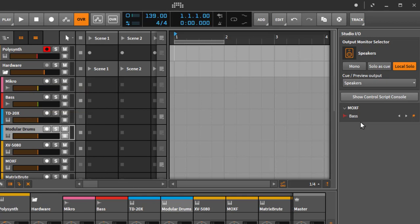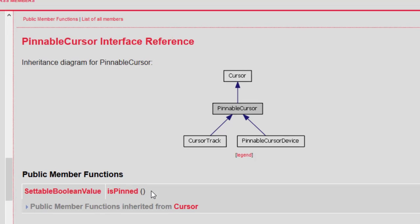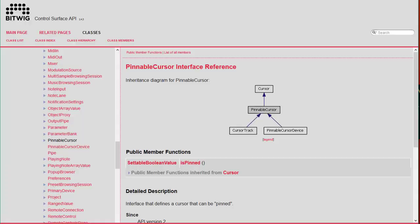By using the pin feature you can use your device separately, so you can have multiple devices controlling different tracks. There is also API support for that — you can pin a track from your device. If you look into the pinnable cursor interface, it is implemented both by the cursor track and by the pinnable cursor device, which we'll talk about later. It has the property 'is pinned', and since we already saw how to use a boolean property in the transport tutorial, you can use that to press a button and pin the track.